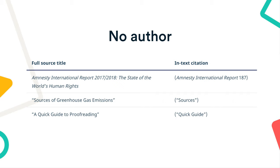Depending on the type of source, if it's a self-contained work — for example, a whole website or an entire book — put the title in italics. If the source is contained within a larger whole — for example, a page on a website or a chapter of a book — put the title in quotation marks.